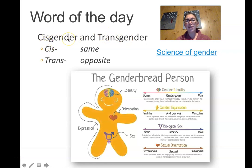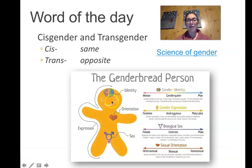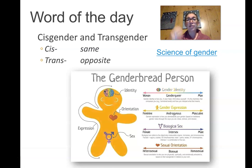Cisgender means that your brain and your genitalia match. Transgender means that your brain and your genitalia don't match. When I say the brain and genitalia don't match, I'm not talking about it being all in one's head — it's not psychological. It is actually the physical structure and biology of the brain that differs between males and females.